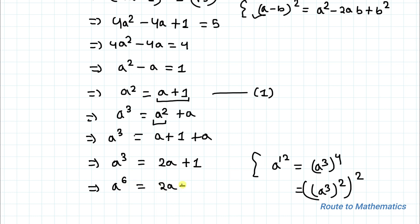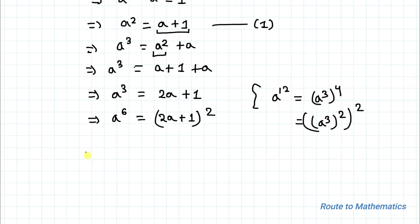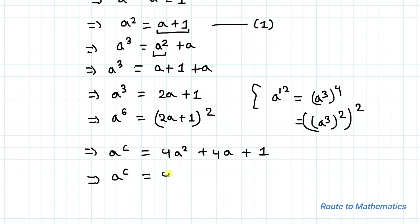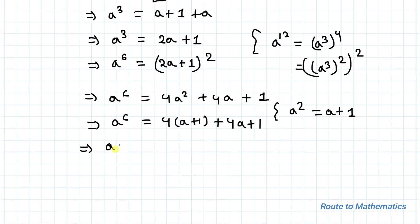Squaring both sides we get a to the power 6 equals to (2a plus 1) whole squared, which gives 4a² plus 4a plus 1. From Equation 1 we know a² equals to a plus 1, so we substitute to get 4(a plus 1) plus 4a plus 1, which gives a to the power 6 equals to 8a plus 5.